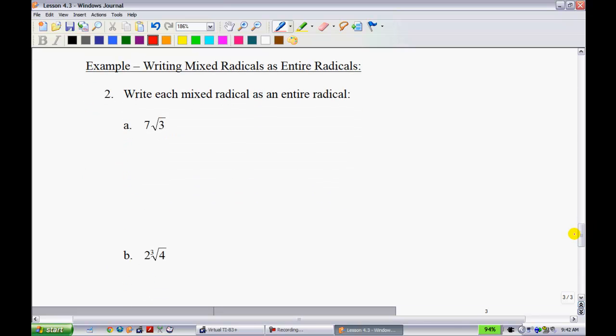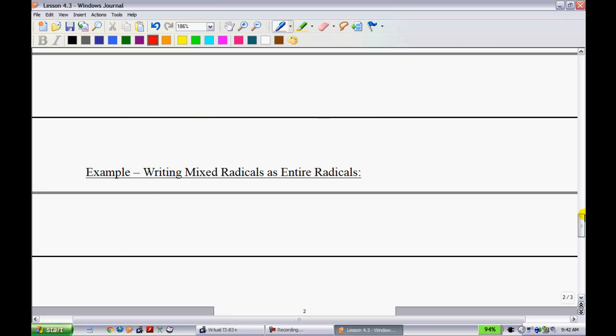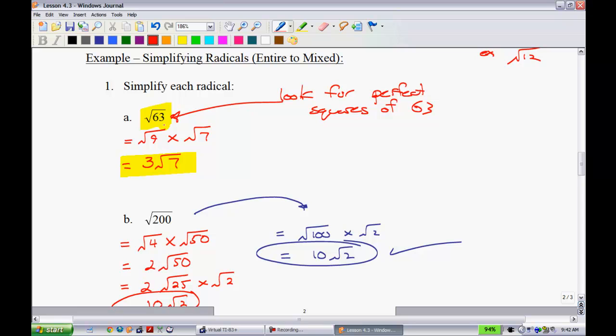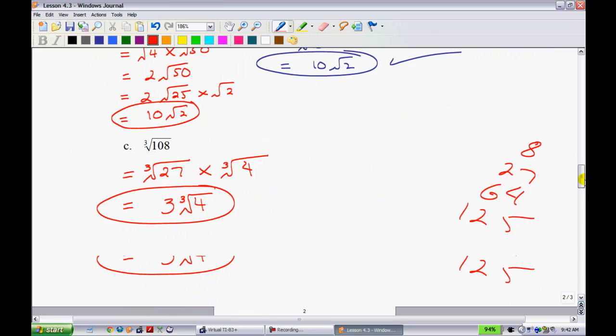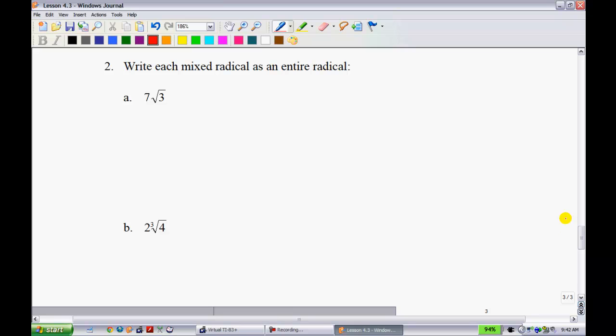Last examples. Now we're going to go backwards. I took root 63 and simplified it to 3 root 7. Now we're going to go backwards. Imagine I have 3 root 7 and want to go back to where I started. What did that 3 used to be? It used to be a 9. We're going to put these numbers back inside by squaring them, or if it's cubed, we'll cube them. What did this 7 used to be? It had to be 7 squared. I can write this as root 49 times root 3, which equals root 147.